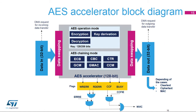This simplified block diagram of the AES Accelerator shows the data path from data in, on the left, to data out, on the right. The AES Accelerator processes 128-bit data blocks using an encryption key with a length of either 128 or 256 bits, with or without a data swapping option.